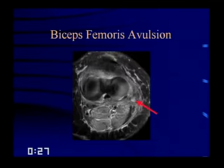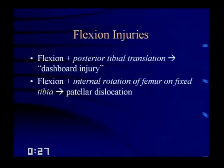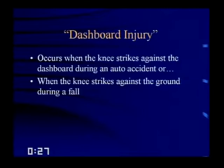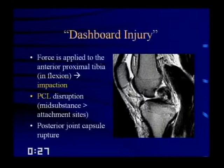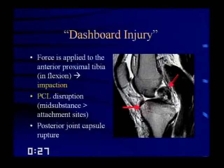Flexion injuries divide into two types: flexion plus posterior tibial translation — essentially the dashboard injury — and flexion with internal rotation of the femur on a fixed tibia, leading to patellar dislocation. A dashboard injury occurs when the knee strikes the dashboard in an auto accident or the ground during a fall. Force is applied to the anterior aspect of the proximal tibia in flexion, creating a bone bruise and disruption of the PCL. Usually mid-substance, but can be at the attachment site. This is the most common mechanism for a PCL tear.